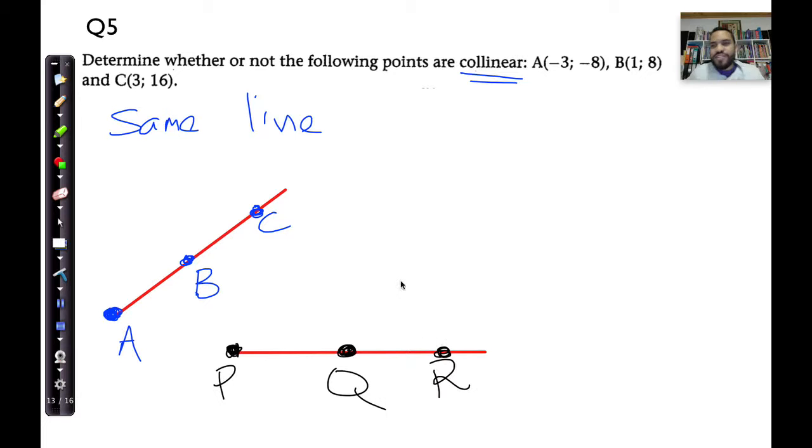So, P, Q, R is a straight line, or P, Q, Q, R, and we can also conclude that these points are collinear. In other words, they fall on the same straight line.